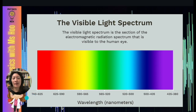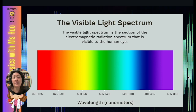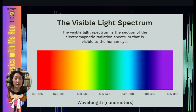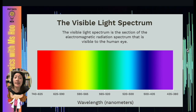Let's start with the concept of red shifting. First, let's look at the visible light spectrum. The visible light spectrum is the section of the electromagnetic radiation spectrum that is visible to the human eye. Light is made up of many different colors, and the order roughly follows a rainbow: red, orange, yellow, green, blue, indigo, violet. Red has the longest wavelength, while violet has the shortest wavelength.